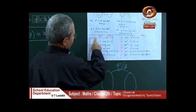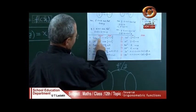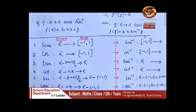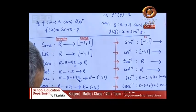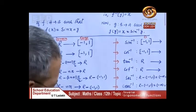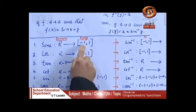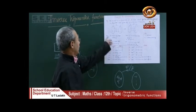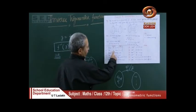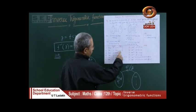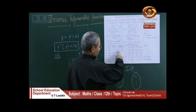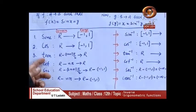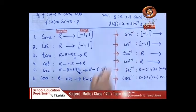The sin function maps from the real number domain to the range [-1, 1]. Similarly, cos maps from ℝ to the closed interval [-1, 1]. Then tan, cosec, and others. I will explain sin inverse in the next chart — a graphical representation. The function is from X to Y such that f(x) = sin x = y, which we studied in class 11. We take values of the sine at key angles: 0, 90°, 180°, 270°.